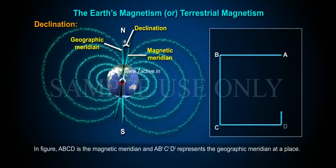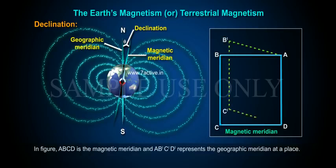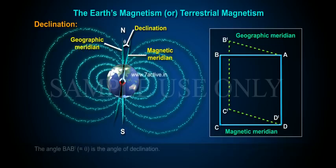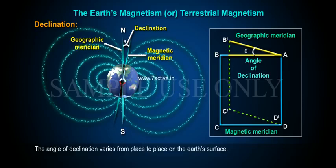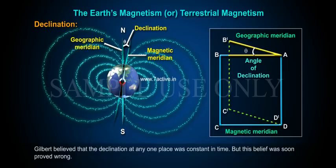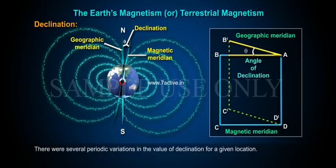The angle between the magnetic meridian and the geographic meridian at a place is known as declination or variation. In the figure, ABCD is the magnetic meridian and AB'C'D' represents the geographic meridian at a place. The angle BAB' equal to θ is the angle of declination. The angle of declination varies from place to place on the earth's surface. Gilbert believed that the declination at any one place was constant in time, but this belief was soon proved wrong — there are several periodic variations in the value of declination for a given location.